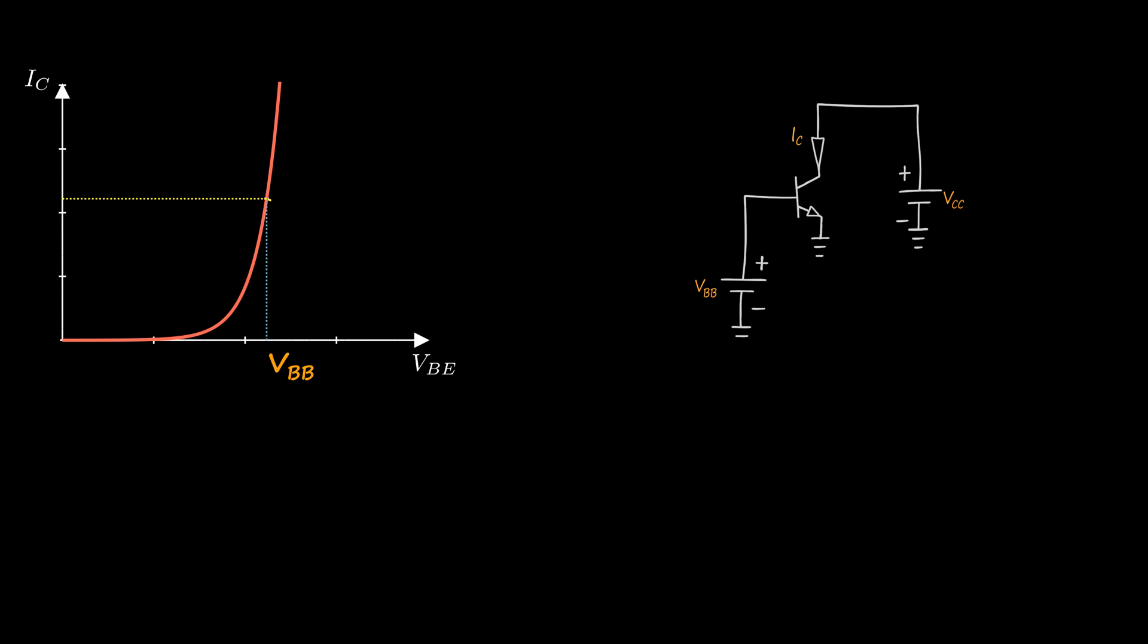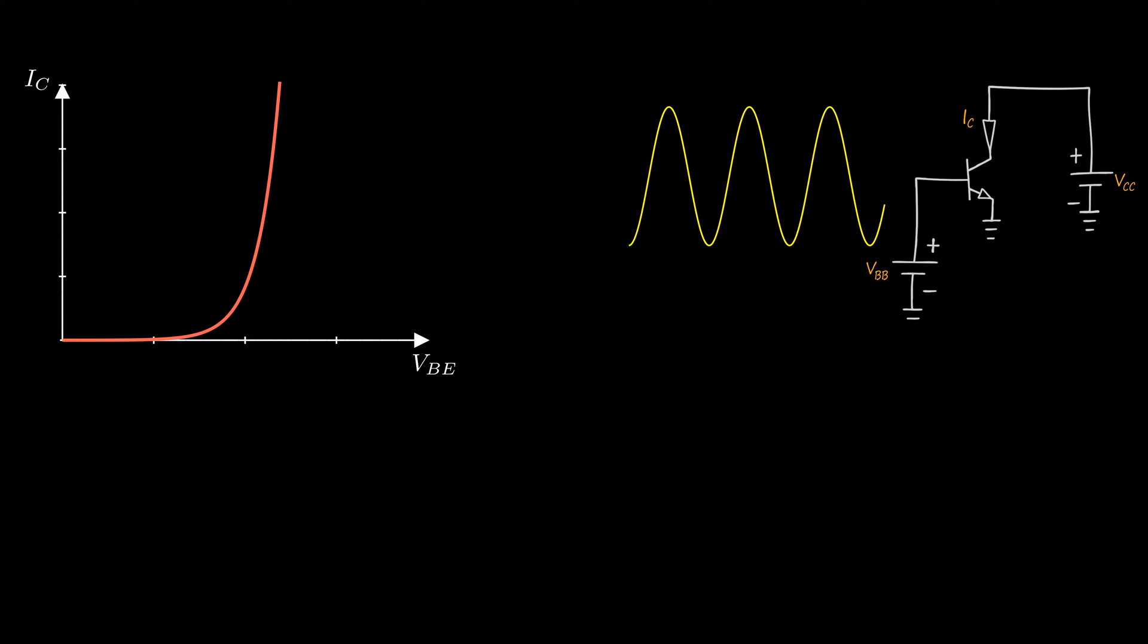Usually we are interested in amplifying time variable signals like audio for example. The simplest time variable signal is the sinusoid. Any other signal can be seen as a sum of sinusoids from Fourier analysis.